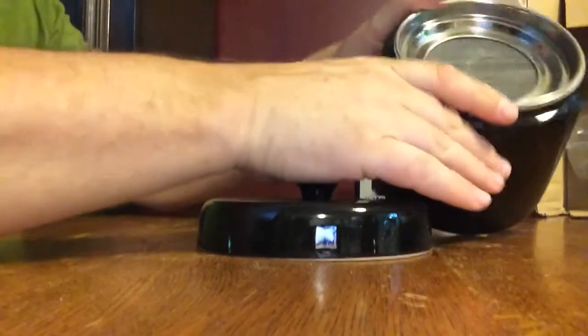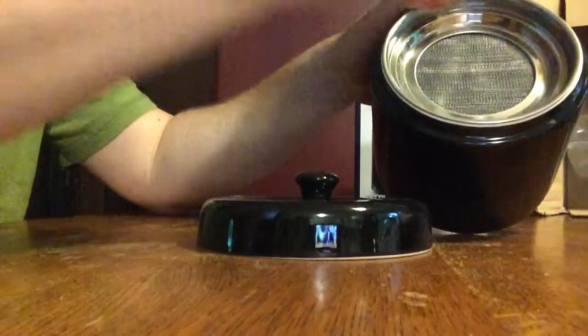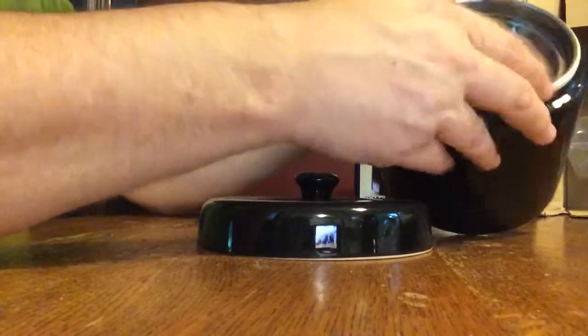So let's say you're going to use bacon grease. You put that screen right on there. And now when you pour your grease in, the chunks of bacon will stay there and the actual good grease will go through.